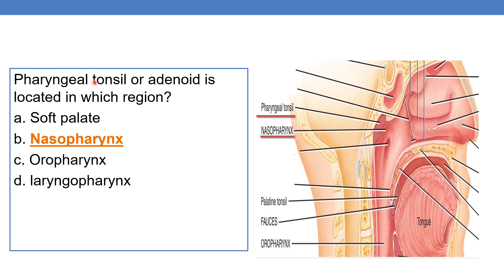The pharyngeal tonsil, or adenoid, is located in which region? The pharyngeal tonsil or adenoid is located in the nasopharynx. So the correct option is option B. The nasopharynx has the pharyngeal tonsil or adenoid.